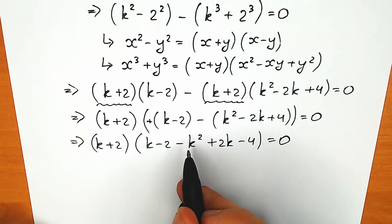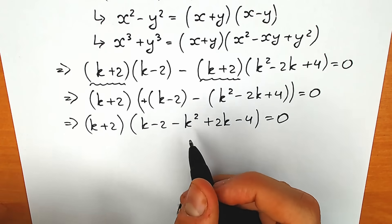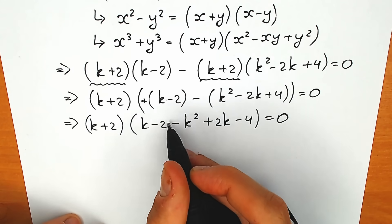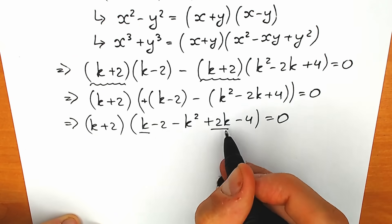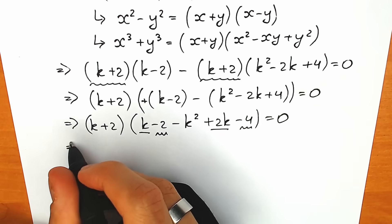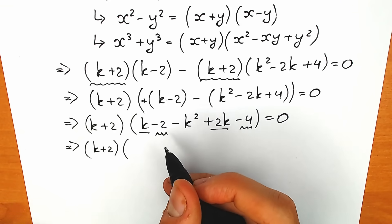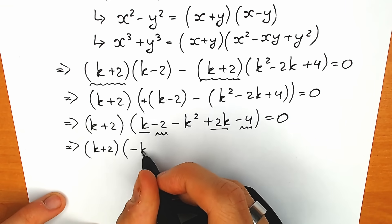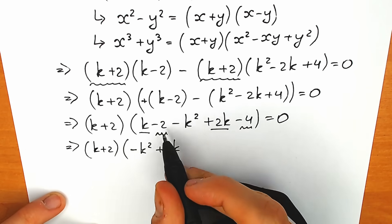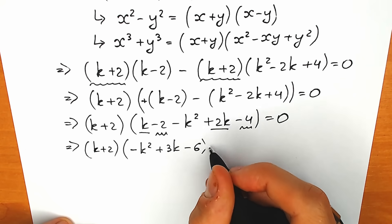Let's simplify this expression. We need to change the order a little bit because it looks like a quadratic equation — the second power is the highest. Grouping everything: we have k plus 2 times (minus k-squared plus 3k minus 6), equal to zero.